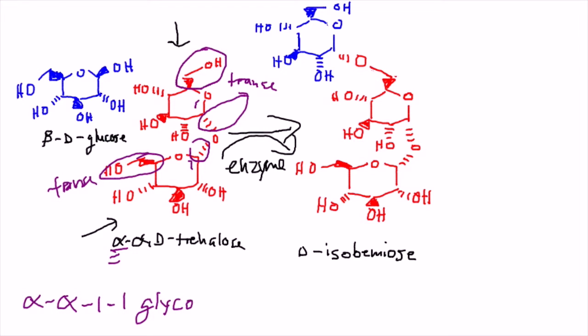This makes it an alpha-alpha linkage. Now, when we look at where the carbons are connected to the ether, we have an alpha-alpha-1,1 glycosidic linkage.